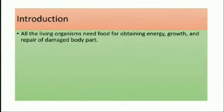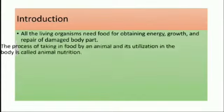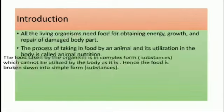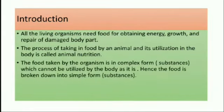We know all living organisms need food for obtaining energy, growth and repair of the damaged body part. The process of taking in food by an animal and its utilization in the body is known as animal nutrition. The food taken by the organism is in complex form, that is in the form of carbohydrate, which has to be broken down into simple sugars so that the body can use it.